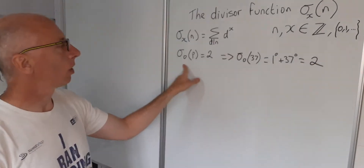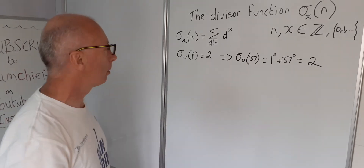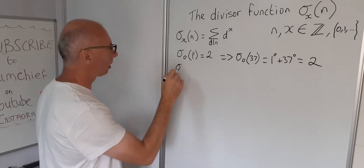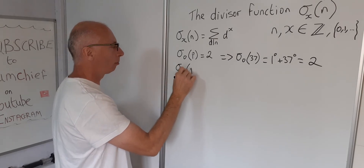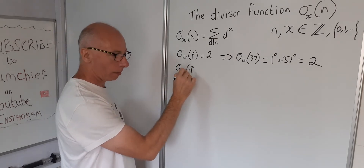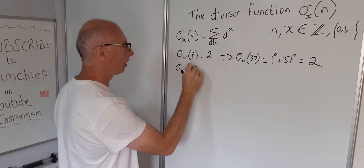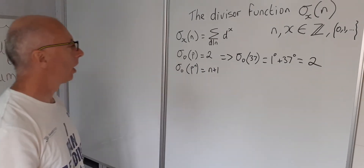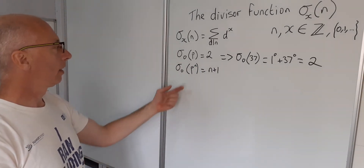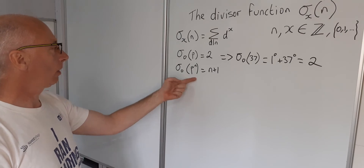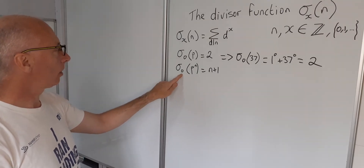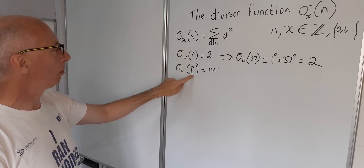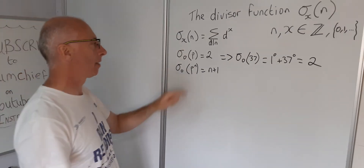The next property is that sigma_0(pⁿ) = n+1, where p is a prime number raised to the power of n. Let's work through what that means.